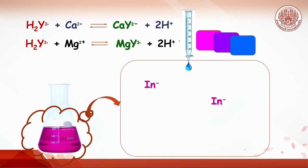Since hydronium ion is formed during titration, buffer solution is added to control the reaction at pH 10.